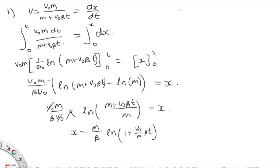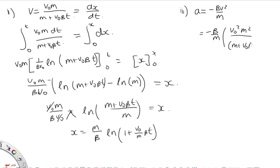Part 3: find acceleration as a function of time. We defined acceleration as −βv²/m. Substituting v = v0m/(m + v0βt): a = −βv0²m/(m + v0βt)².